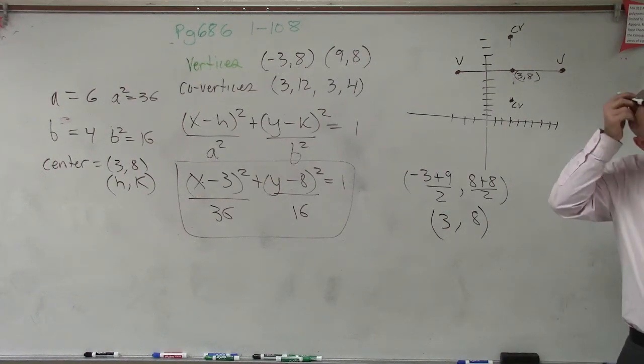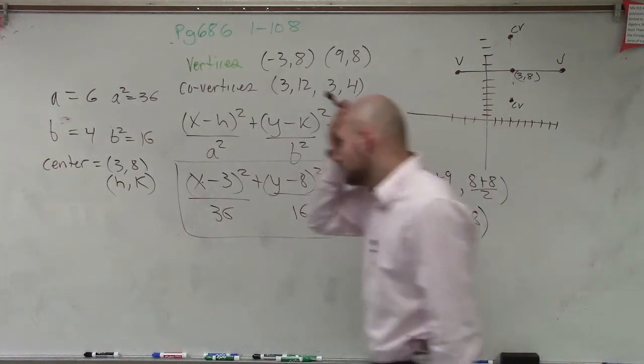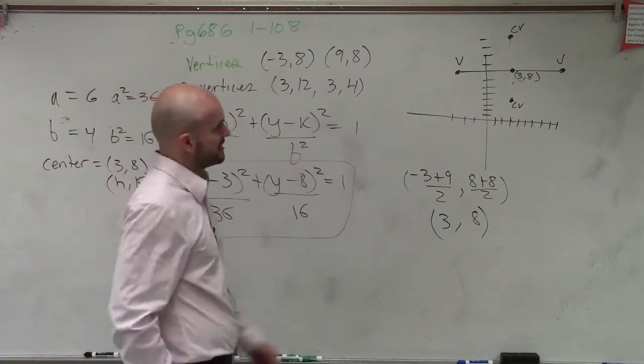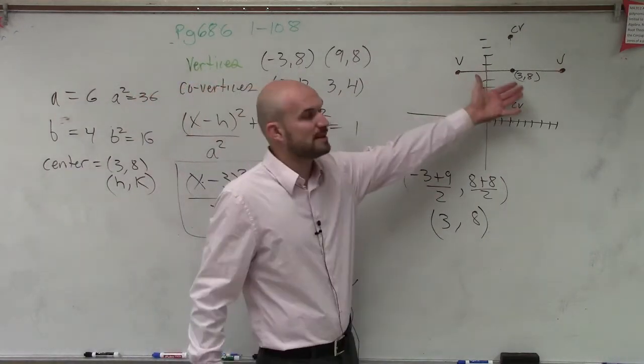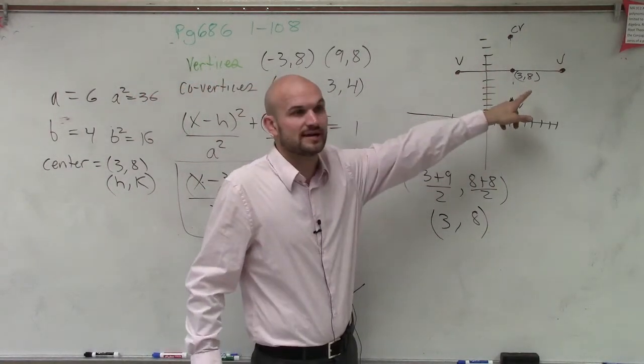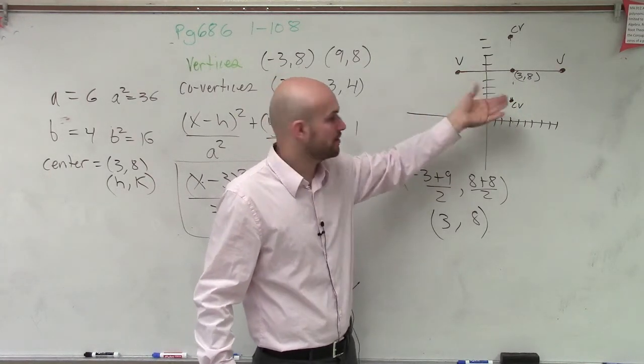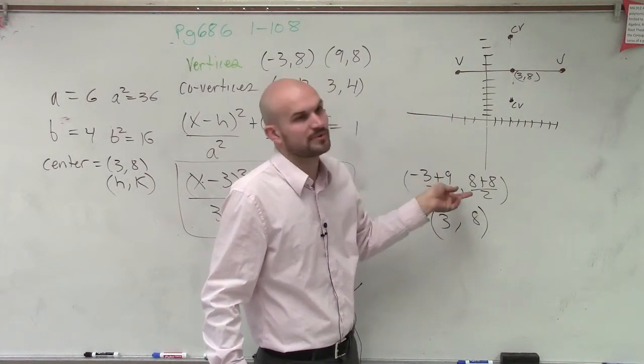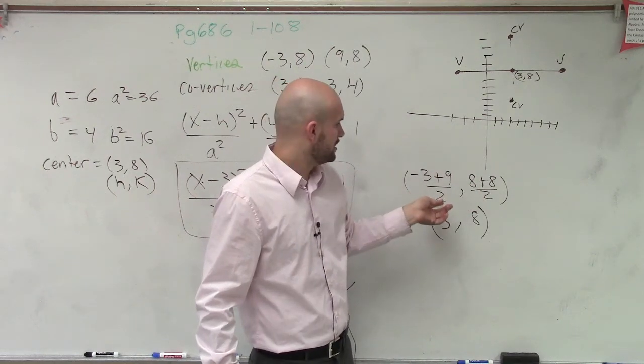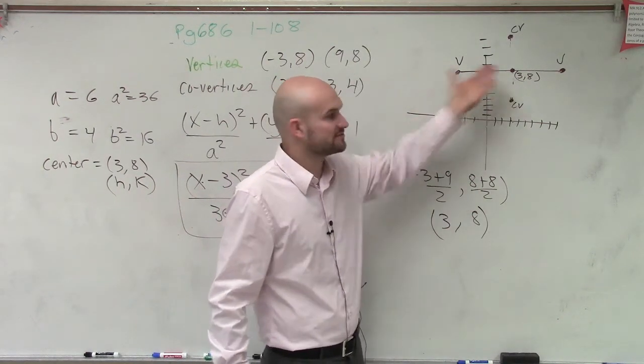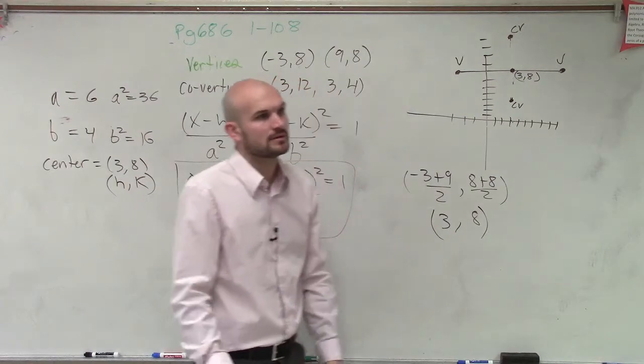Follow? Questions? Yes, Brittany? Can you explain how I got 6? 6 for a. a was the distance. Remember, a is the distance from your vertice to your center. So since you graphed it, you can simply just count, right? Or you could use your midpoint and say, negative 3 plus 9, that center was 6, right? Or the distance from one to the other was 6.